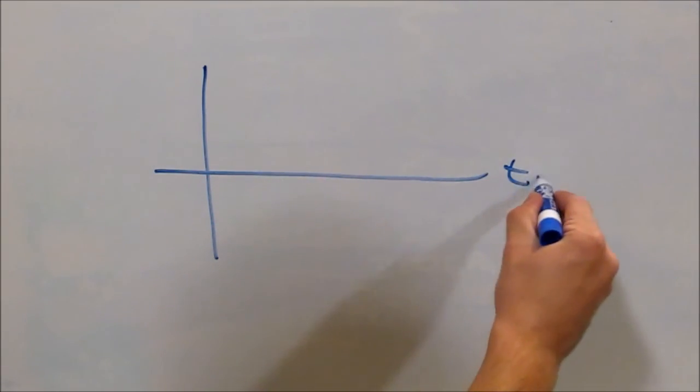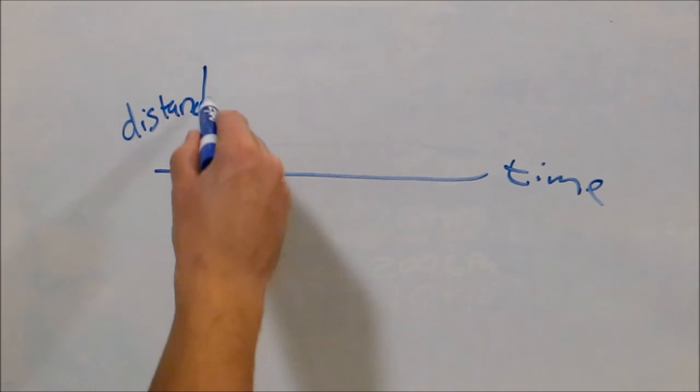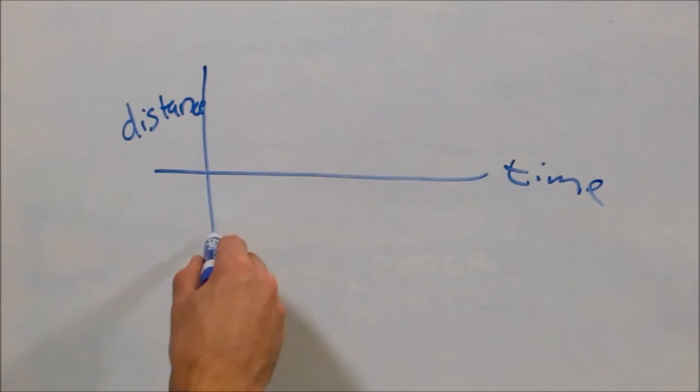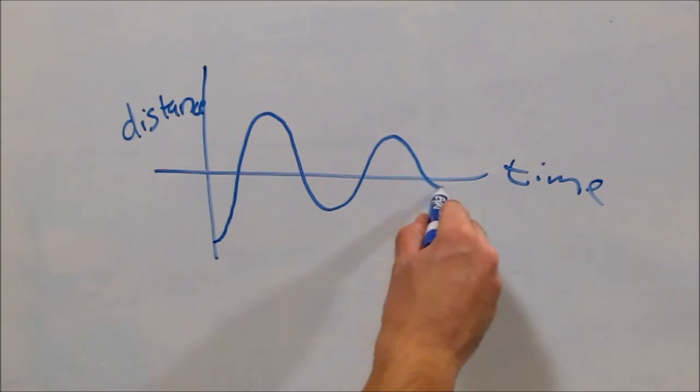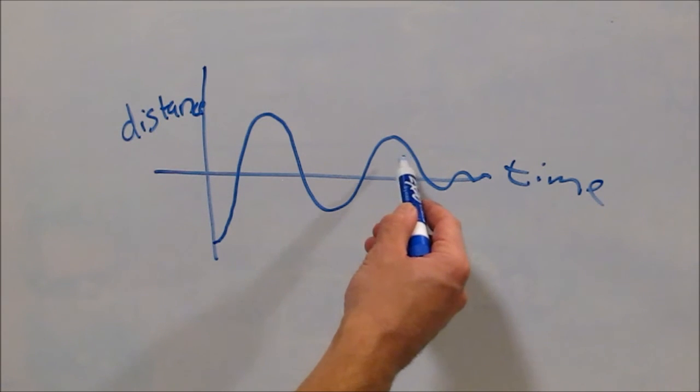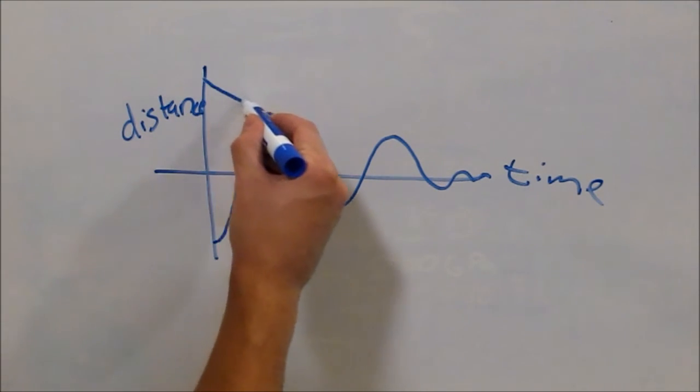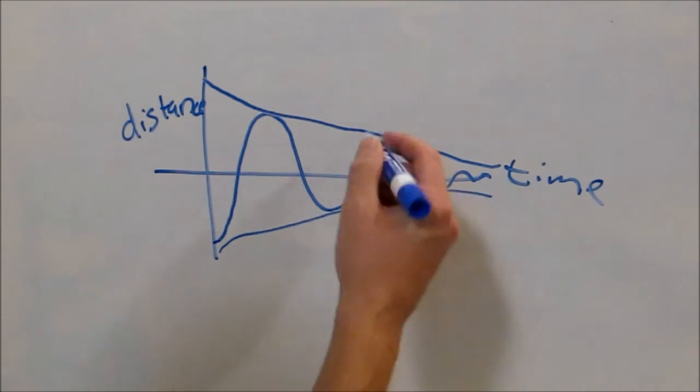So let's plot what happened with our ruler. This is time, and this is distance. So we moved the ruler down, so I guess we want to call this down initially. And if you watch the video slowly, you'll find that it goes like this. And eventually it stops over time. So the first peak's the largest, the subsequent peak's a little bit less, and eventually it stops. Well, if you look at this little curve here, you can draw one here too. This is essentially damping.